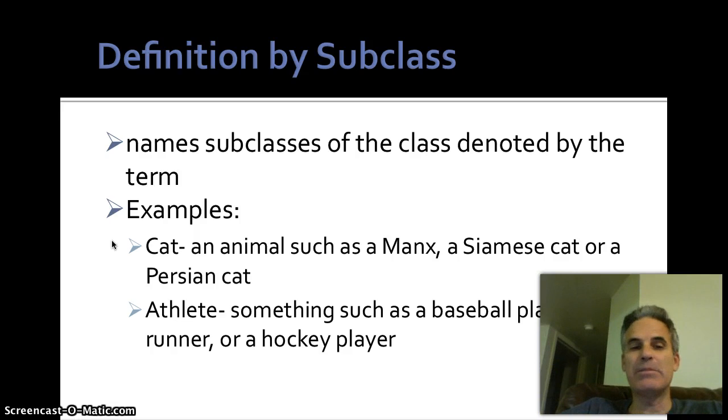Athletes, someone such as a baseball player, a runner, or a hockey player. Again, these are types of athletes. And so the difference between enumerative and subclass is enumerative lists individuals. Subclass talks about types or classes within the class.